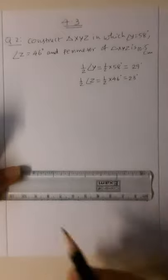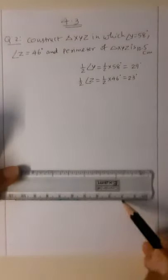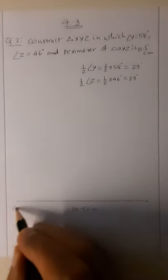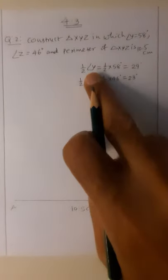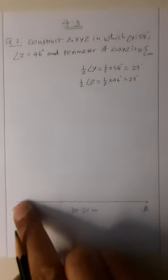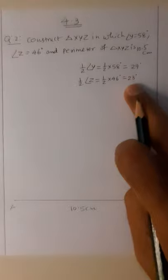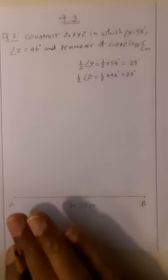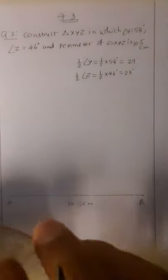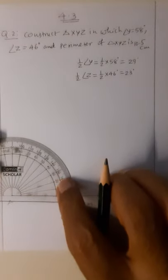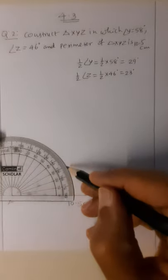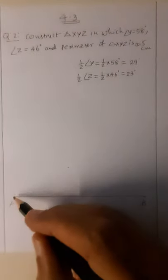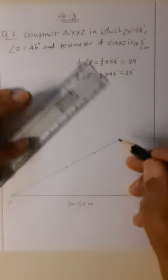We draw a segment of length 10.5 centimeter — one point at zero, another at 10.5. This segment AB equals the perimeter of 10.5 centimeter. From point A I draw a 29-degree angle using the protractor — the ray goes this side, 10, 20, 30 — one degree less from 30 gives 29 degrees. I mark the dot and join point A to it.